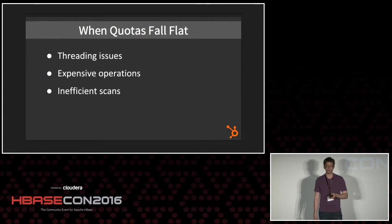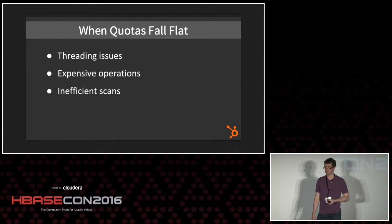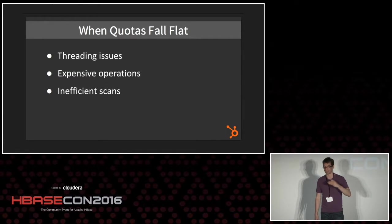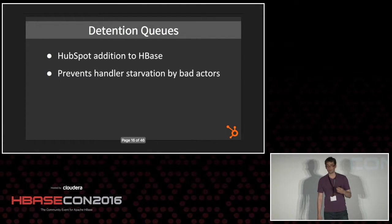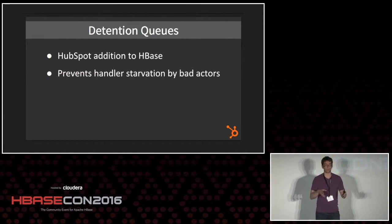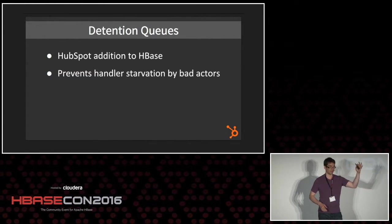Unfortunately, quotas don't solve all the problems we ran into. Sometimes we have threading issues — if all the RPC handlers for scans, reads, or writes are used up, quotas don't help there. Also, some operations like check-and-increment are especially expensive, and inefficient scans don't take a huge number to really screw things up — they can chew up RPC handlers with just a small number of requests. To deal with that, we introduced detention queues: a separate set of RPC handlers and a separate queue for things determined to be bad actors. They're a small proportion of the overall pool, preventing starvation of those handlers by other actors.